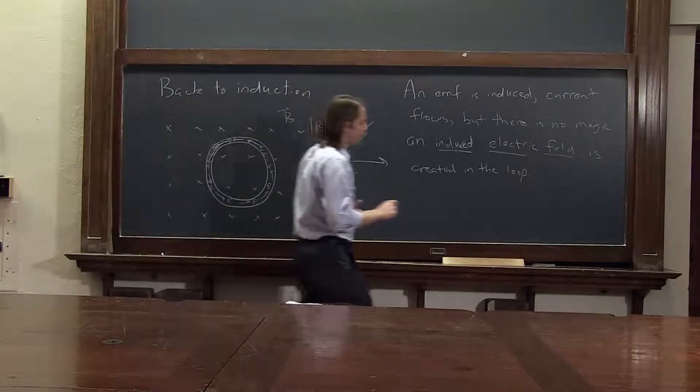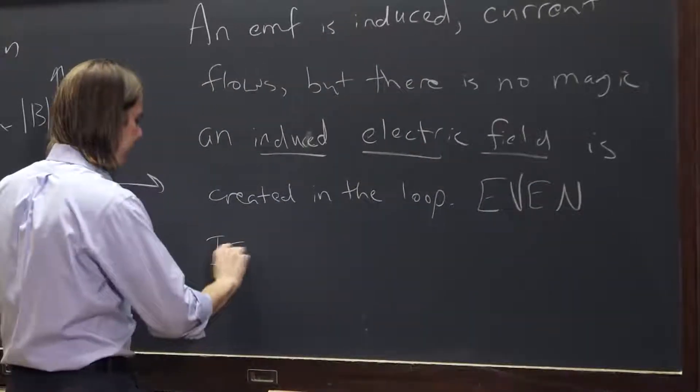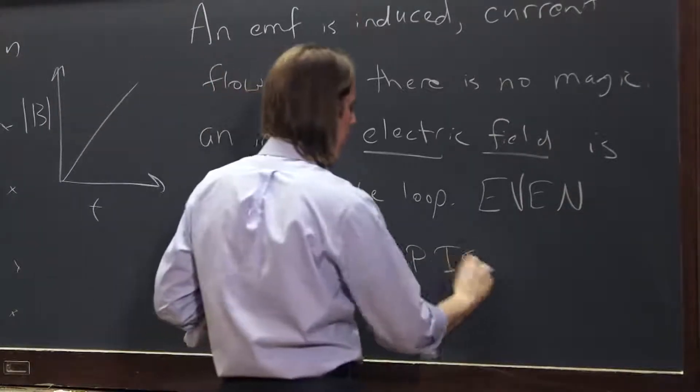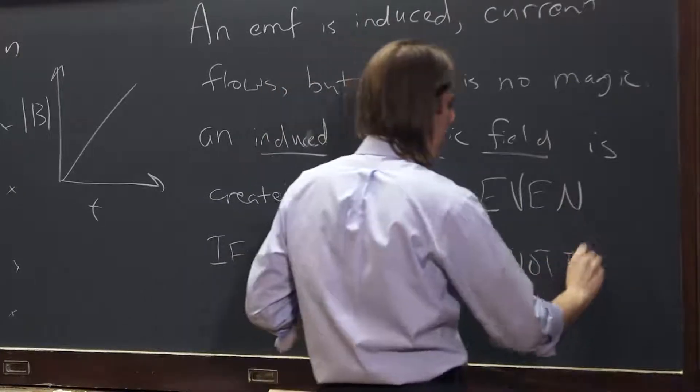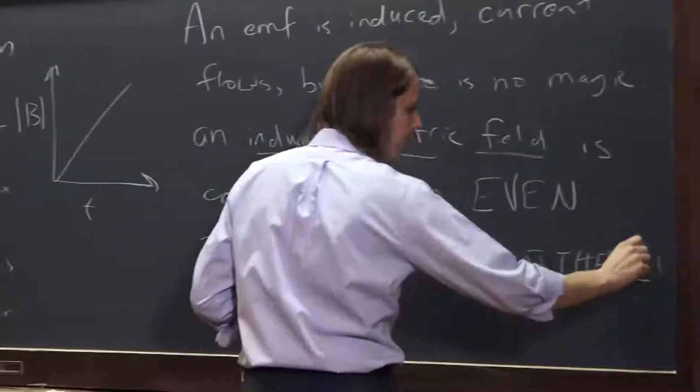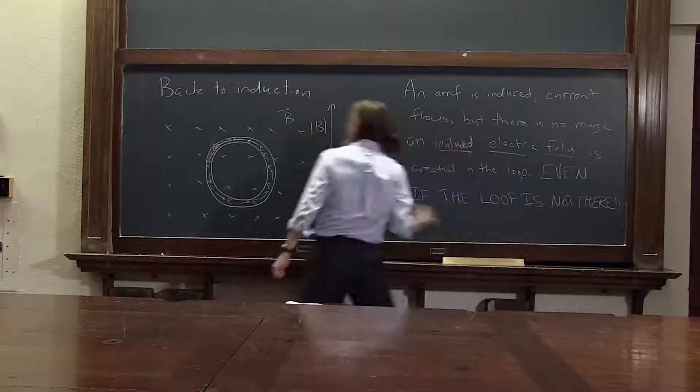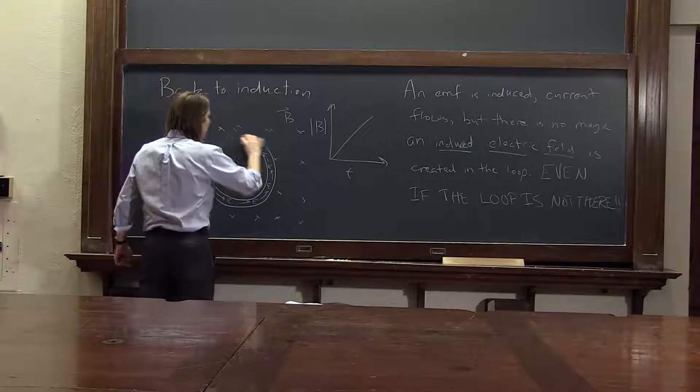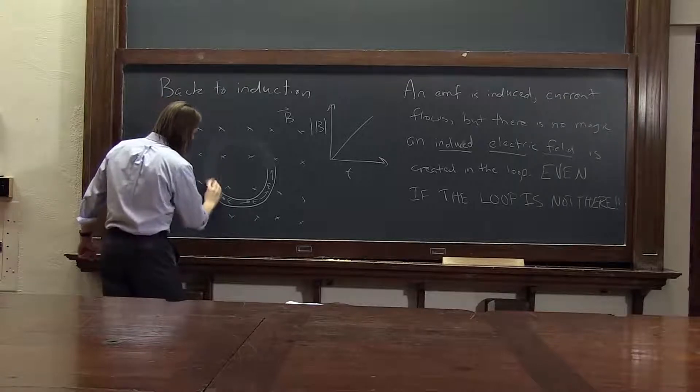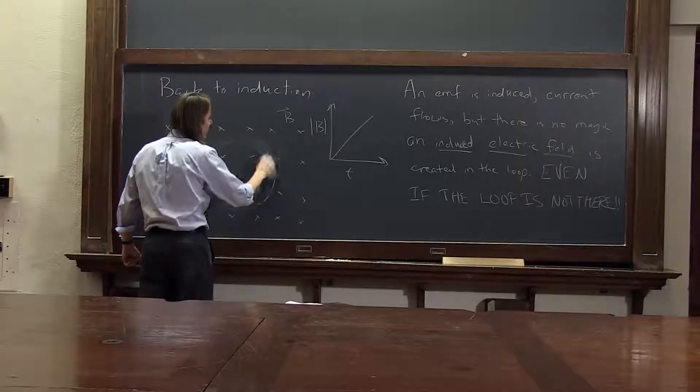Here's the weird part. Even if the loop is not there, that's worthy of two exclamation points because we're saying that whether there's a loop there or not is irrelevant. Because what is an electric field? An electric field doesn't require the test charge to be there. An electric field is just a property of space at that location.